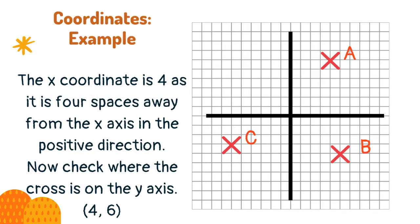The x-coordinate is 4 as it is 4 spaces away from the x-axis in the positive direction. Now check where the cross is on the y-axis. 4, 6.